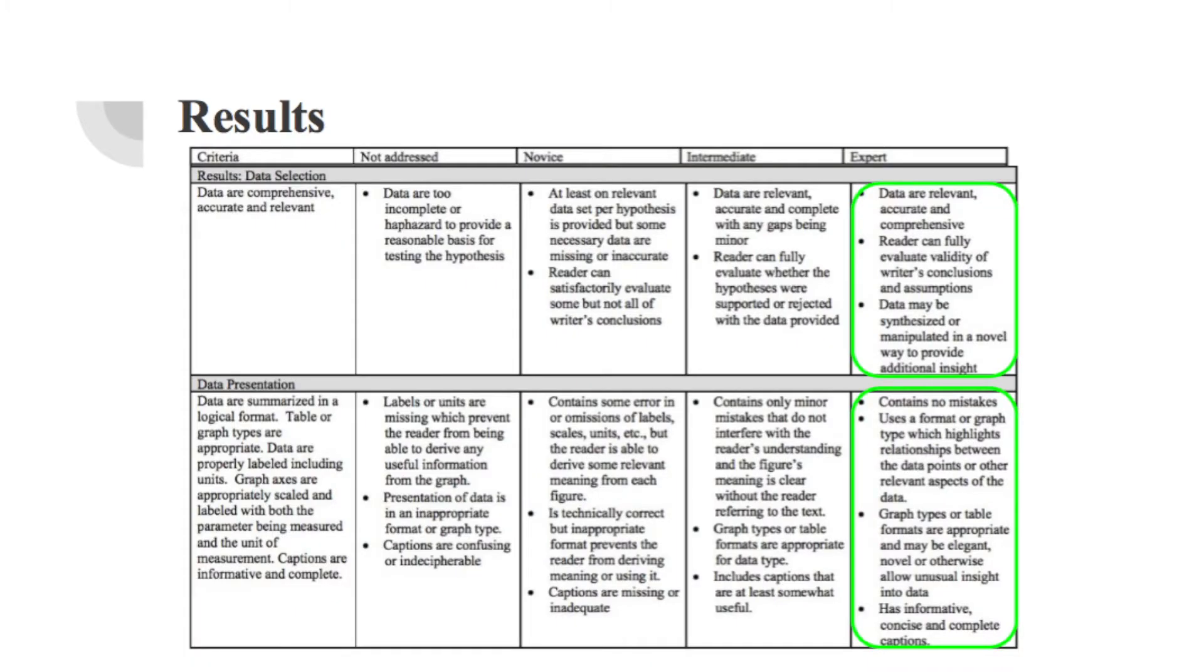Next is the results section. This section is made up of three criteria: data selection, data presentation, and statistical analysis. Each of the criteria here are worth 10 points, totaling 30 points for this section.